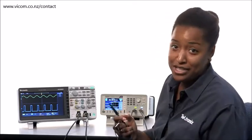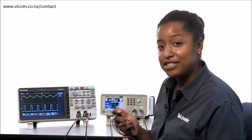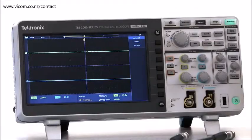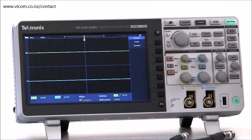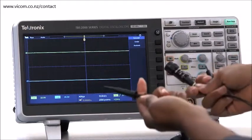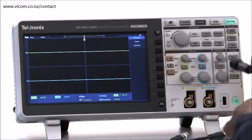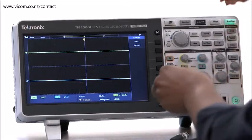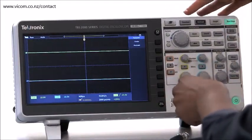Probes are often underappreciated. They're responsible for actually capturing the signal and impact all of what you see on the signal downstream. The most common probes divide or attenuate the input signal by 10. These are called 10x probes. They can measure relatively high frequency signals and have good voltage range.